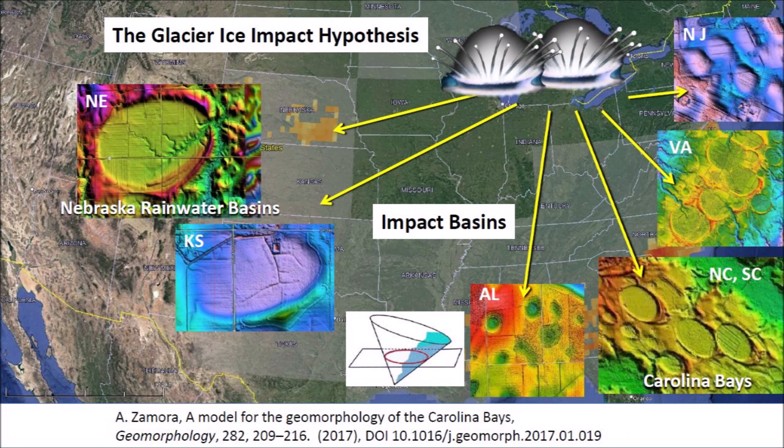Welcome to another edition of the Carolina Bay of the Day, where we study the secondary impacts made by the glacier ice boulders that were ejected by one or more extraterrestrial impacts on the Laurentide Ice Sheet by the Great Lakes. The secondary impacts produce seismic vibrations that liquefied unconsolidated soil, and the oblique impacts of glacier ice created inclined conical cavities that became shallow elliptical basins by viscous relaxation. In Nebraska, these basins are called rainwater basins, and along the Atlantic Coastal Plain, they are called Carolina Bays.